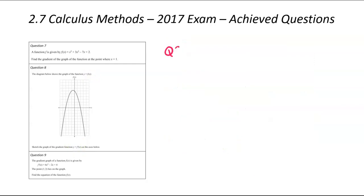We're now on question 9. We've been given the gradient function represented by the equation 6x² - 2x + 4, and the original function goes through the point (1, 3). We need to find the original equation. So let's write down the gradient function we were given: f'(x) = 6x² - 2x + 4.